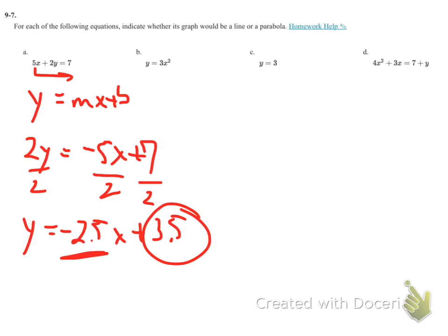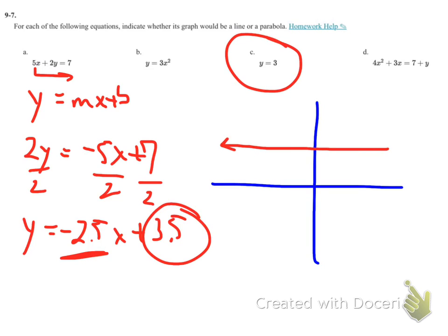Problem c doesn't even have any x's. However, that is going to be a line that's going to look like this at a value of 3. It's gonna be a horizontal line.